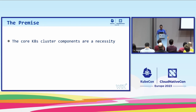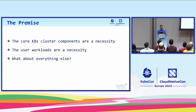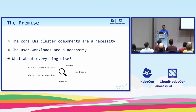What's the talk about? The premise: the core Kubernetes cluster components are a necessity — clearly, because how would you run the cluster without the API server? User workloads are also a necessity, because otherwise why would you stage a cluster? However, what about everything else — stuff that comes free in the managed cluster, like everything around logs, exporters, CSI drivers, metrics, et cetera.